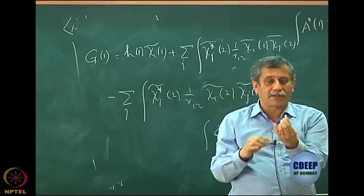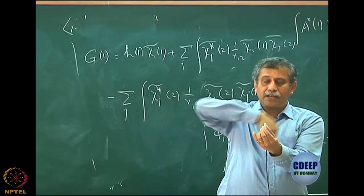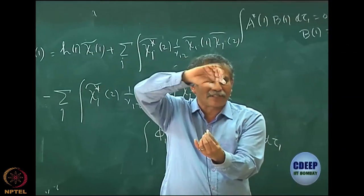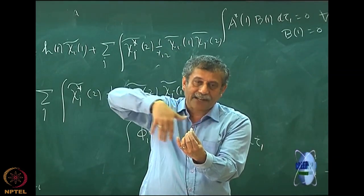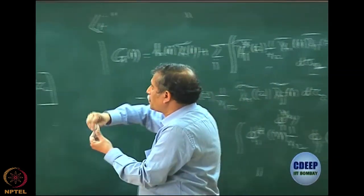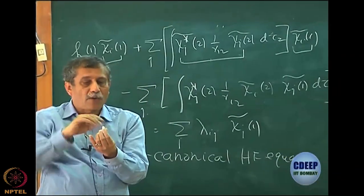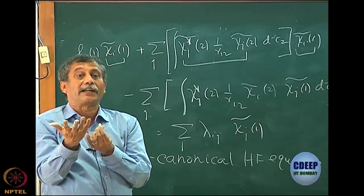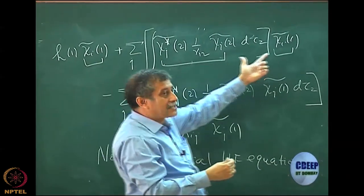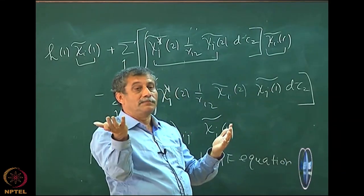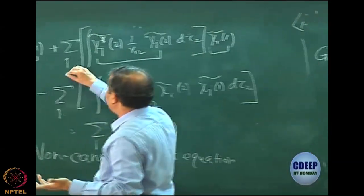Then I have electron 1 which is sitting on chi j tilde. There is another electron sitting in chi j tilde — it is moving all across. It is a classical interpretation, so electrons are not moving, it is a density. The entire density chi j star 2, chi j 2 is integrated between d tau 2. Integration essentially means it moves all across and what electron 1 sees due to that. This is a classical electrostatic force that electron 1 sees due to the movement of electron 2. What about electrons 3, 4 — that has been achieved by this sum.